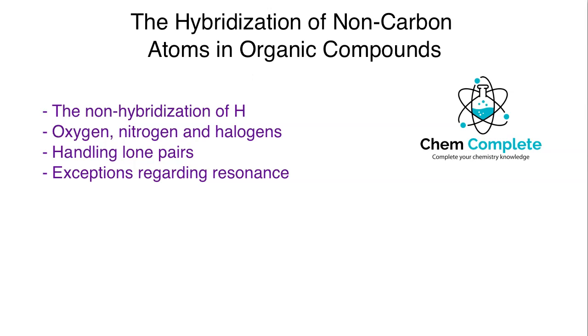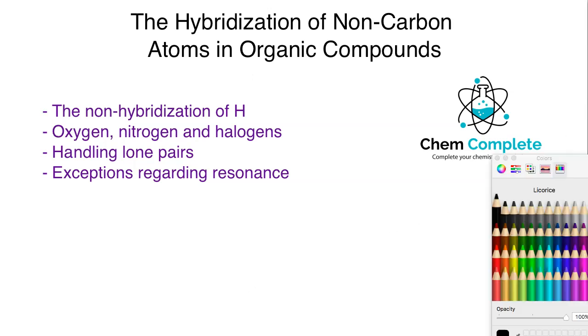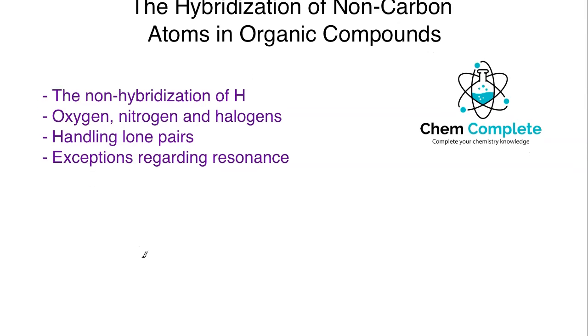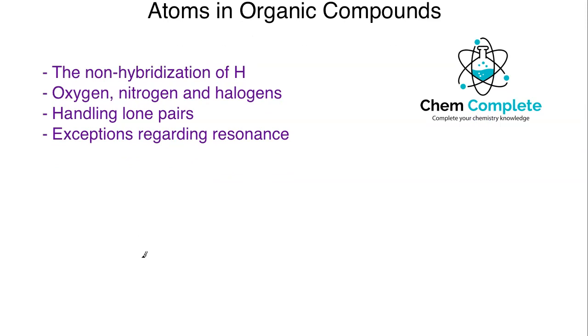The first thing that I really want to discuss is the non-hybridization of hydrogen. Hydrogen is probably, next to carbon, the most prevalent atom that we are going to see in organic compounds. Now, as far as hydrogen is concerned, hydrogen only has a 1s orbital with a single electron in it.